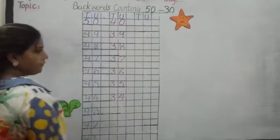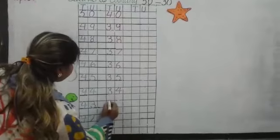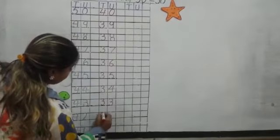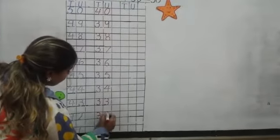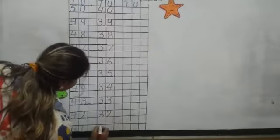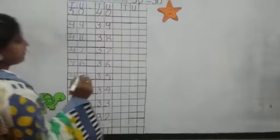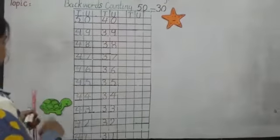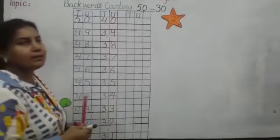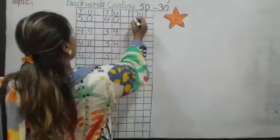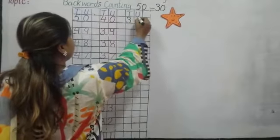And what comes before 34? Yes, 33. Then we will write 32. And then we will write 31. And student, what comes before 31? Okay, think about it. Yes, 3, 0, 30.